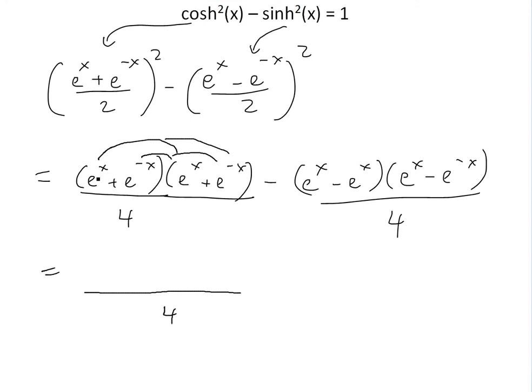We'll get this divided by 4 here. e to the x times e to the x is going to be e to the 2x, and then plus e to the x multiplied by e to the negative x. But then we're going to add it twice because it's going to be e to the negative x times e to the x. So we'll have 2e to the x times e to the negative x right here. And then we'll have a plus e to the negative 2x here.